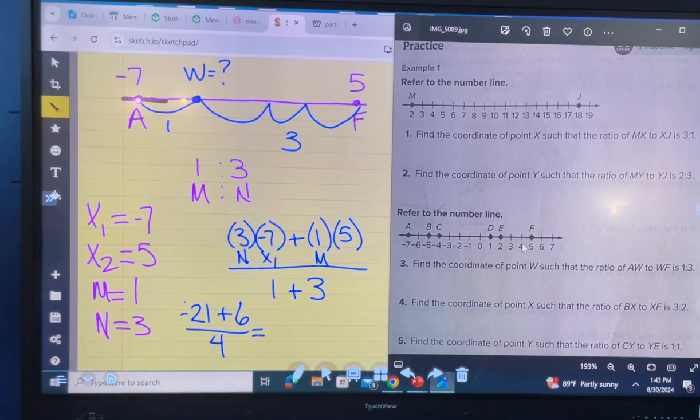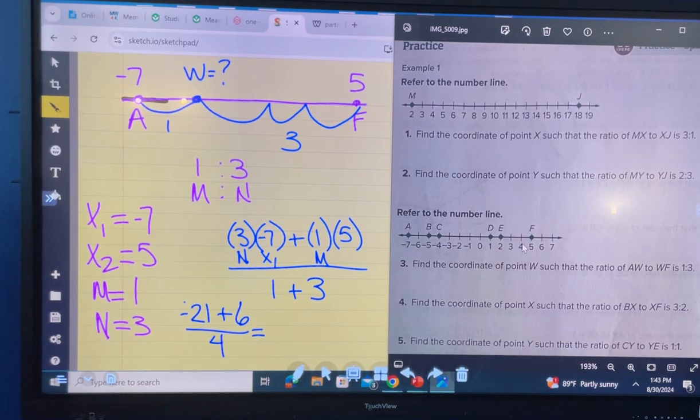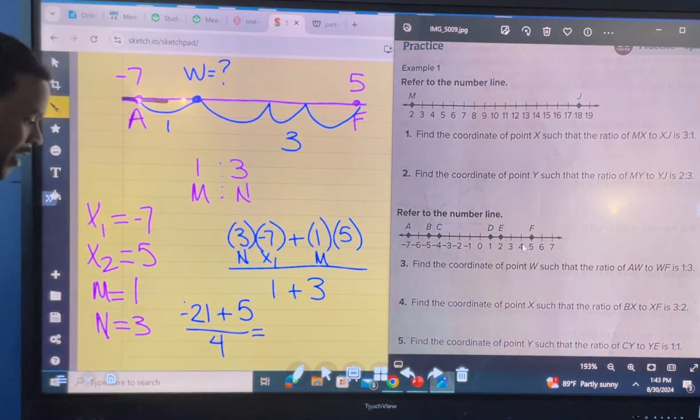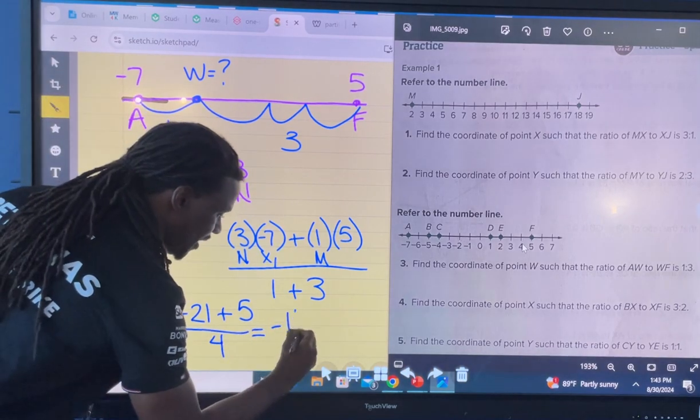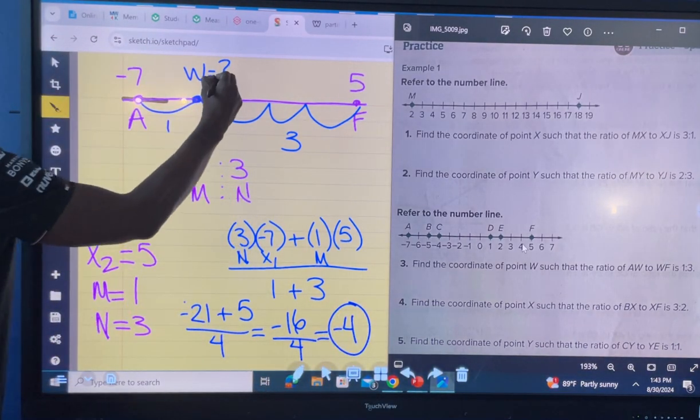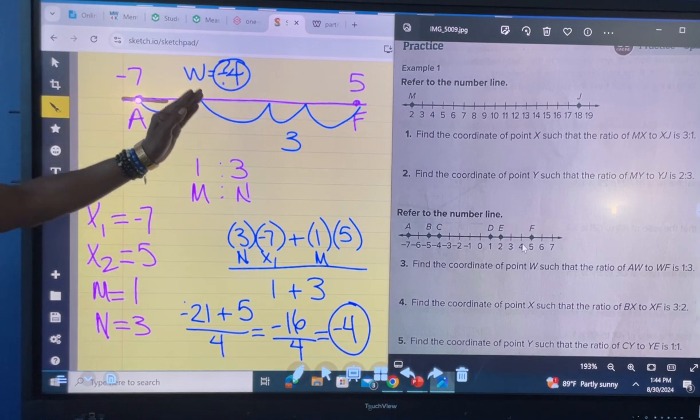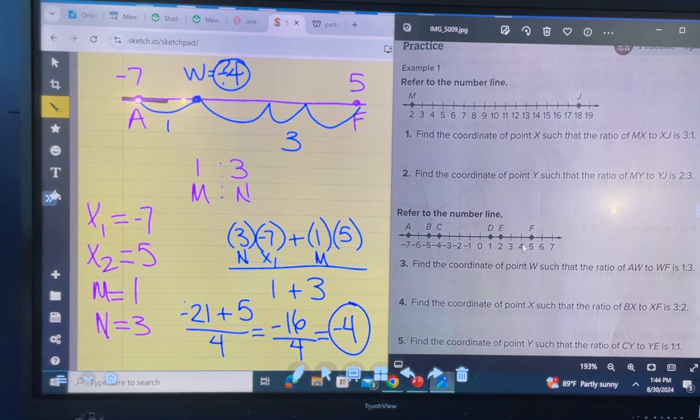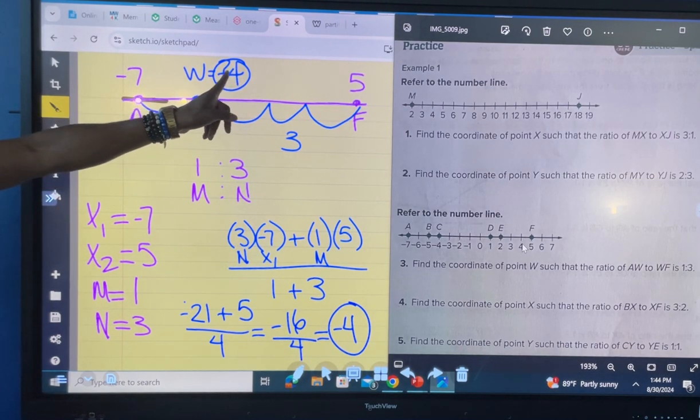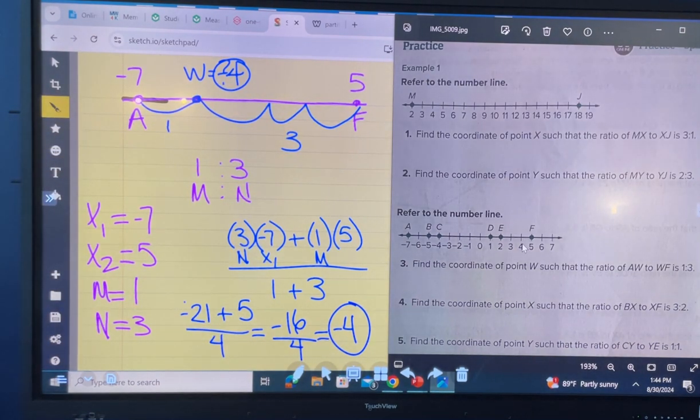So we already have our N value being 3 times X1 of negative 7, plus the M value, which equals 1 times your X2, which is 5. Dividing all of that by the M plus N, which is 4. Very good. So 3 and negative 7 going to give you a negative 21 plus 5 makes negative 16 divided by 4. Meaning your value for W on this number line is at negative 4. So that the ratio, you say, oh, W falls on negative 4. That's the increment. So you can see if I were to ask you what will be the next 3 increments, you know that it is going up by 3. So your next 3 increments should be negative 1, 2, then 5. You should be following along and getting that.